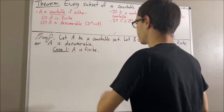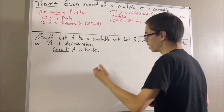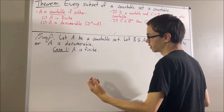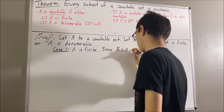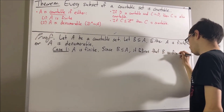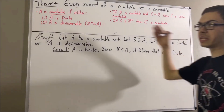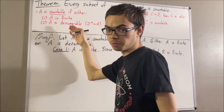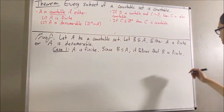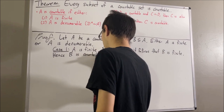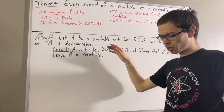In this case, since A is finite and B is a subset of A, we know that every subset of a finite set is finite. So B is finite. Since B is finite, we have that B is either finite or denumerable, so by definition B is countable. That's exactly what we wanted to show, so this completes case one.